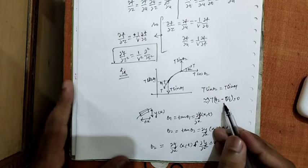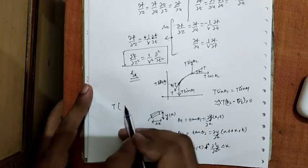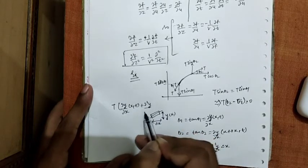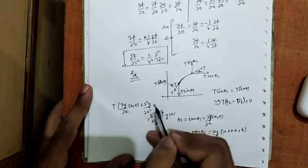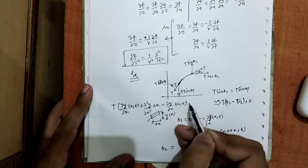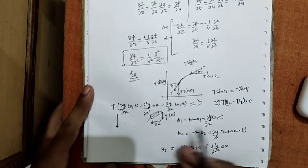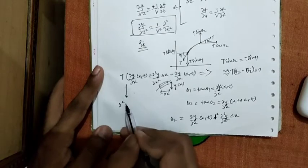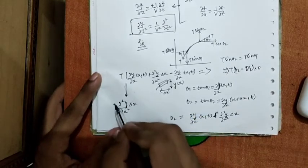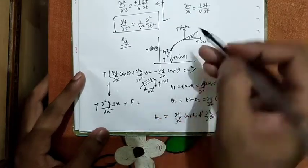Substituting the values of θ₂ and θ₁, the equation becomes T·[∂y/∂x|(x,t) + (∂²y/∂x²)·Δx − ∂y/∂x|(x,t)] = T·(∂²y/∂x²)·Δx. This expression is nothing but a force. The mass per unit length is defined as μ = M/L, so the force equals M·(∂²y/∂t²), and M/Δx = μ for the small segment.